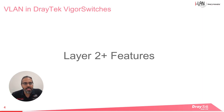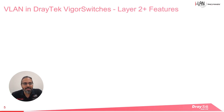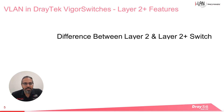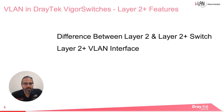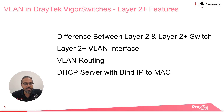Let's review the Layer 2 Plus functions, which are available in higher end VigorSwitches. I'll be starting off by explaining the differences between Layer 2 and Layer 2 Plus VigorSwitches. Then we'll check out the Layer 2 Plus VLAN interface, VLAN routing and setting up the DHCP server by using the bind IP to MAC feature.